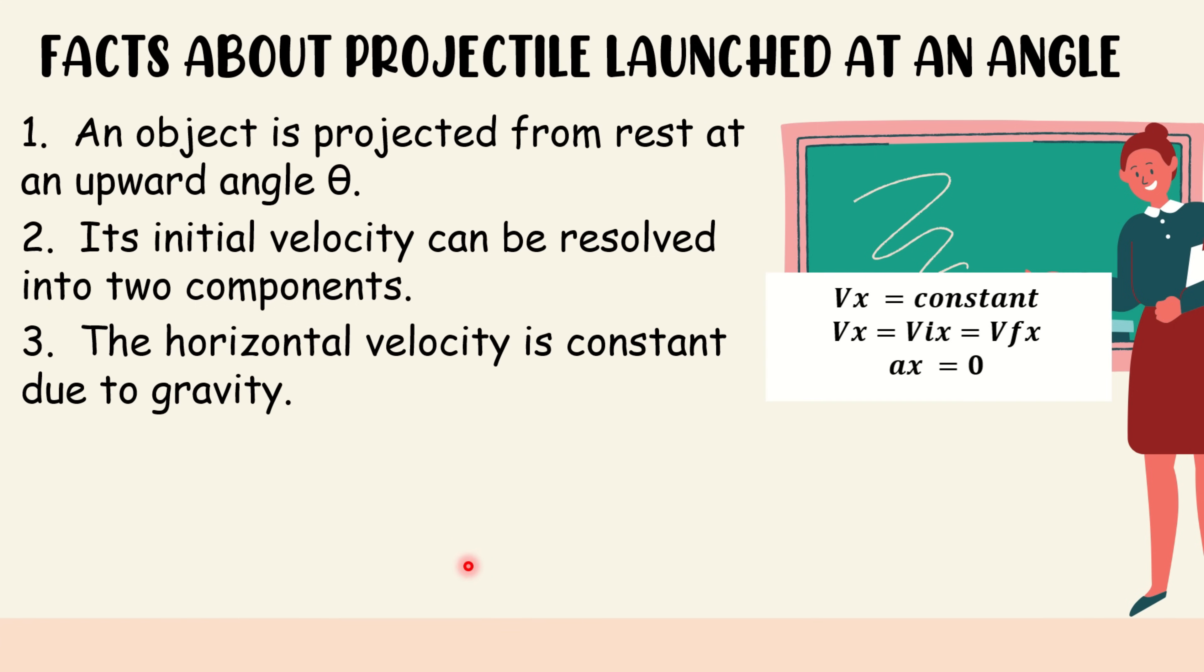Third, the horizontal velocity is constant due to gravity. A constant horizontal velocity that moves in the same direction as the launch, the acceleration of which is zero.